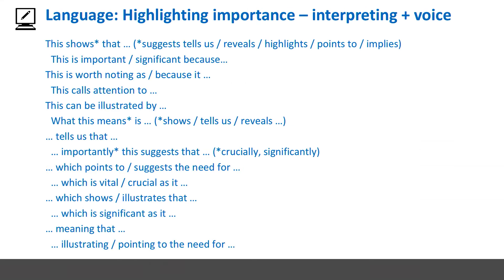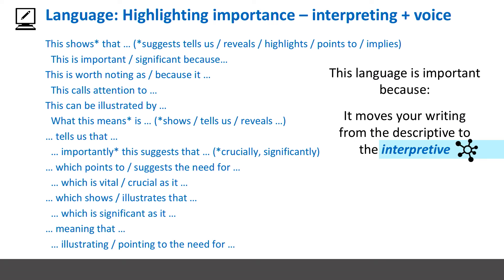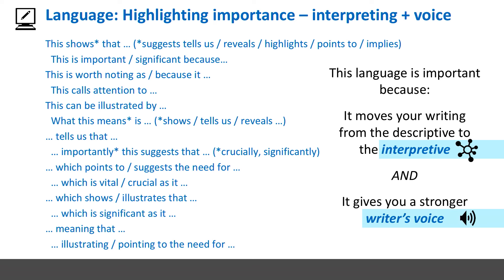There's language we can use to do this — language to highlight importance, to interpret, to give us a voice. 'This shows that.' 'This is important.' 'This is vital.' 'This points to.' This language is important for two key reasons: one, it moves your writing from the descriptive to the interpretive, and two, it gives you a stronger writer's voice. It's you talking. It's you giving interpretation.